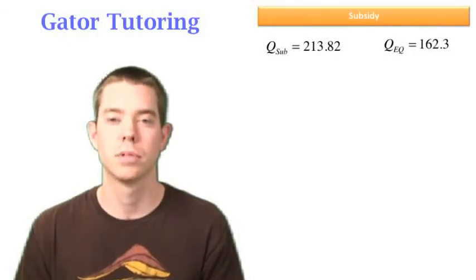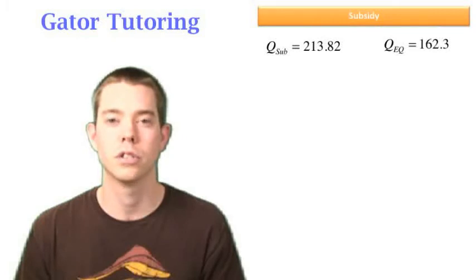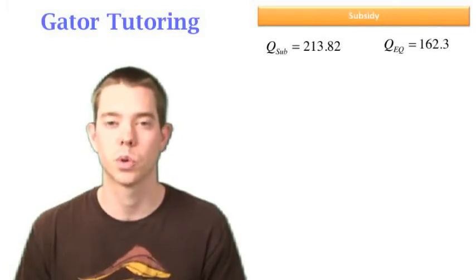So I know that my quantity with the subsidy is 213.82. My equilibrium quantity is 162.3. So that's going to be the base of my triangle, the difference between those two quantities.